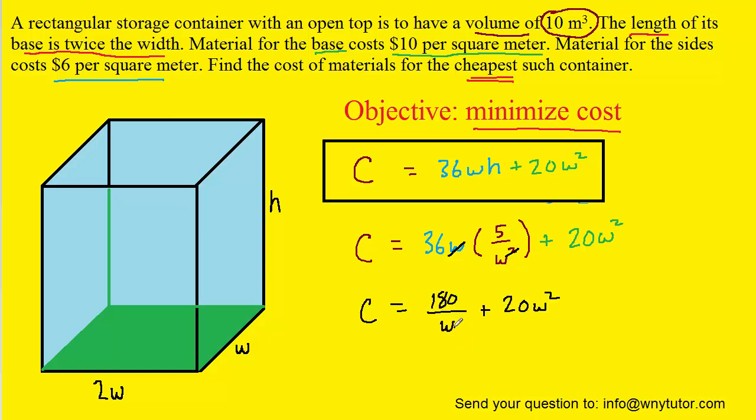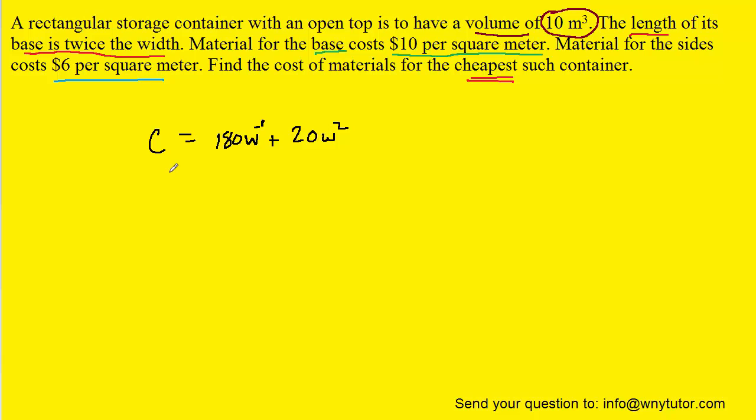And then one last simplification before we move on. We can move the w up to the numerator. We'll see why that's important in just a moment. Remember that the exponent of 1 will become a negative 1 when we move it to the numerator. Okay, so finally we have a cost function in terms of a single variable and simplified in a usable form.